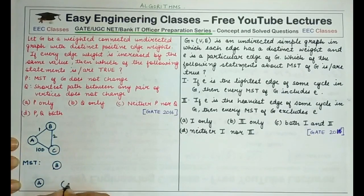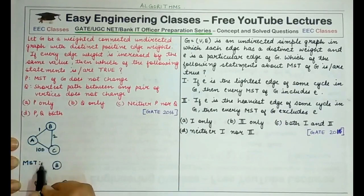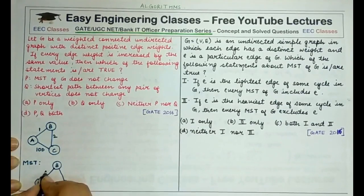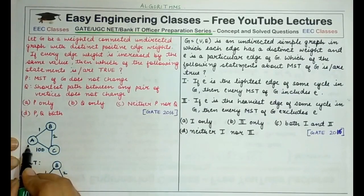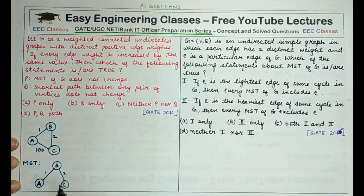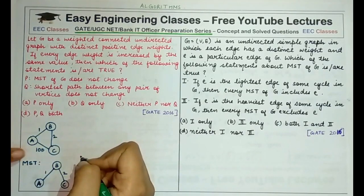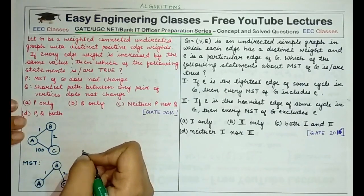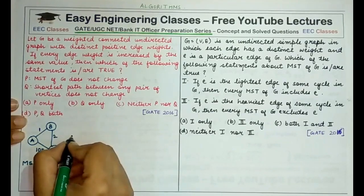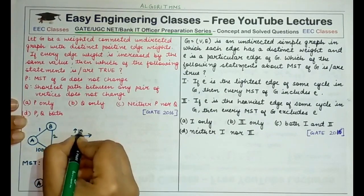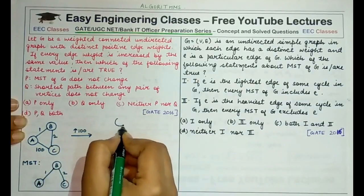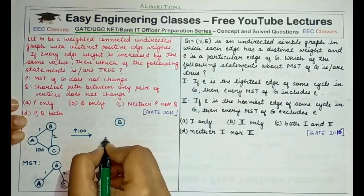To connect all three vertices A, B, and C, the edges AB and BC would be included in the MST because excluding either and including AC would increase the spanning tree weight. Now let's increase the weight of each edge by 100.